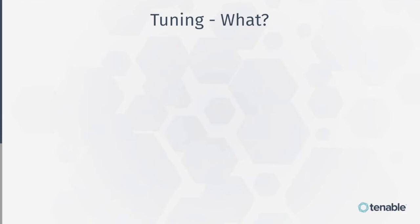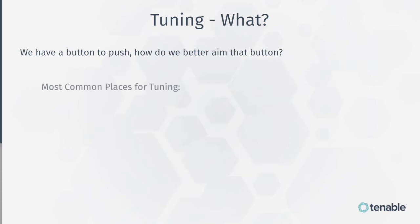Now let's talk about the what. We have a button to push in our web application scan — how do we better aim that button? There are three common places for tuning. The first is in the initial scan configuration. An example of this may be understanding where the application resides in relation to where the scanner is placed. For example, if you are using one of our cloud-based scanners, you may need to whitelist the IP address for our cloud scanner range through your web application firewalls.